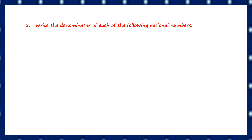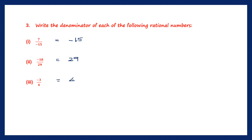Question 3: write the denominator. For 7 by minus 15, the denominator is minus 15. For minus 18 by 29, the denominator is 29. For minus 3 by 4, the denominator is 4.